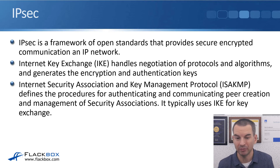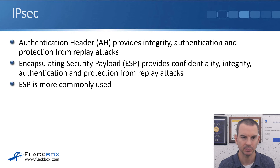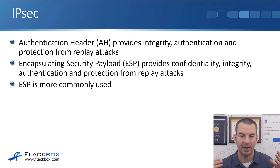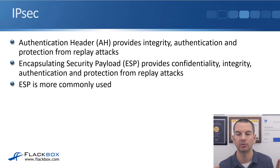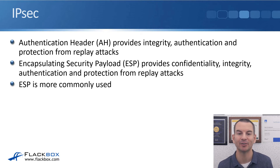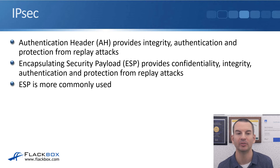Inside IPsec, Internet Key Exchange (IKE) handles negotiation of protocols and algorithms and generates the encryption and authentication keys. ISAKAMP — the Internet Security Association and Key Management Protocol — defines the procedures for authenticating and communicating peer creation and management of security associations. ISAKAMP typically uses IKE for the key exchange, so IKE and ISAKAMP are often used interchangeably. Authentication Header (AH) provides integrity, authentication, and protection from replay attacks. ESP — the Encapsulating Security Payload — provides confidentiality, integrity, authentication, and protection from replay attacks. ESP is a lot more commonly used than AH because AH is missing confidentiality, and with a VPN tunnel you almost always want the data to be encrypted.